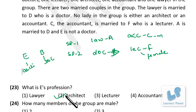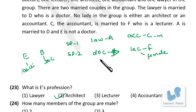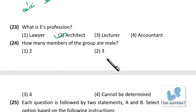How many members of the group are male? We know that the architect and accountant are definitely not female, but for the remaining four we are not sure. We don't know the gender status of A and D, so we cannot determine how many males there are — that is 'cannot be determined.'